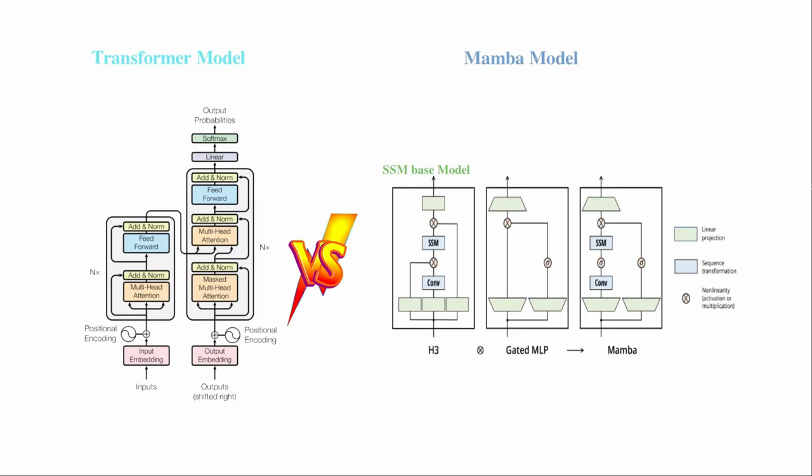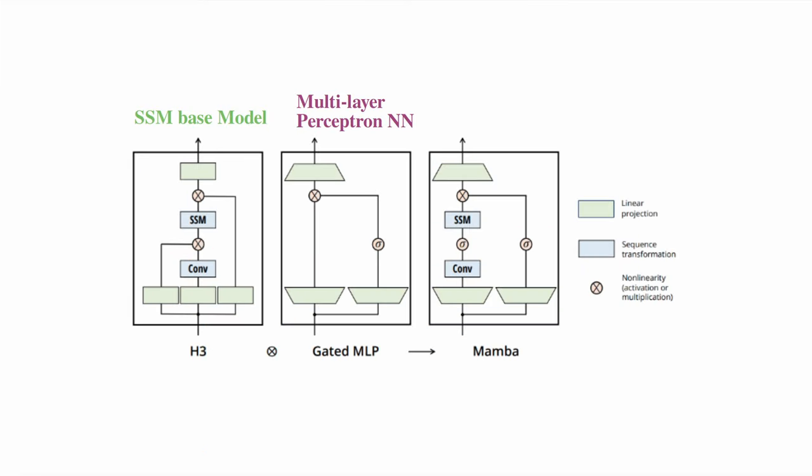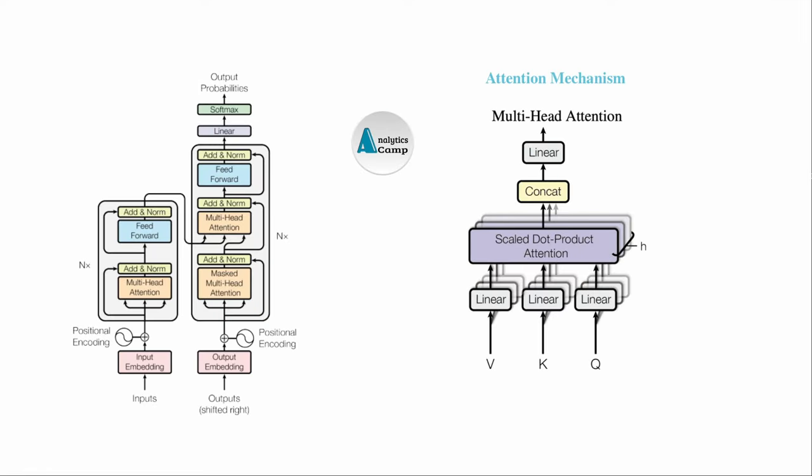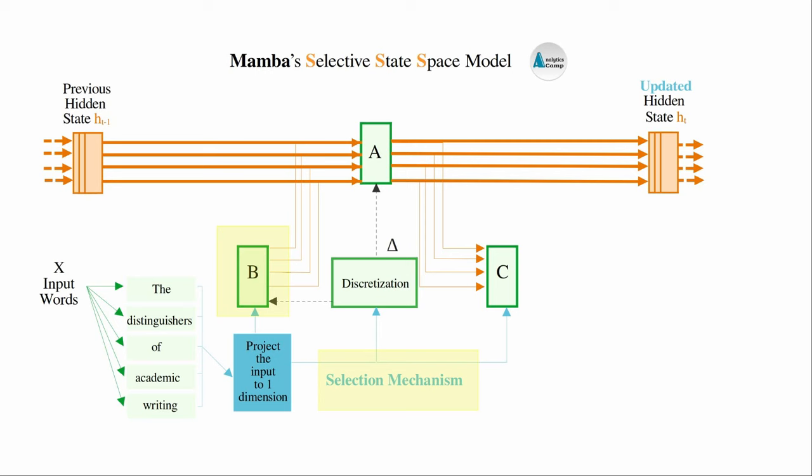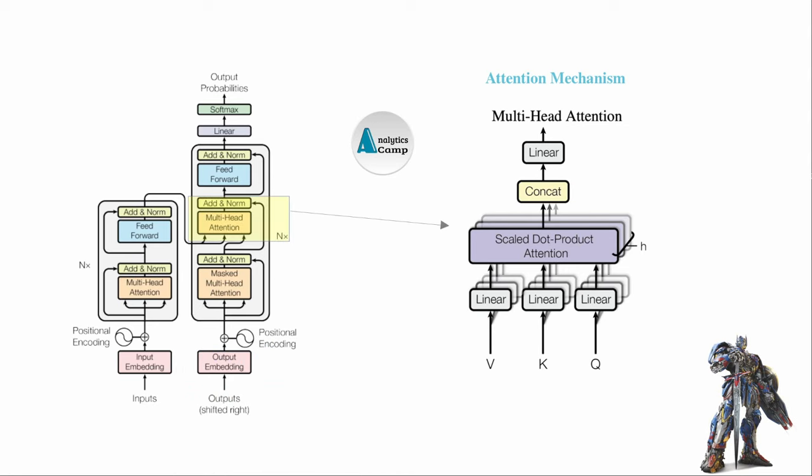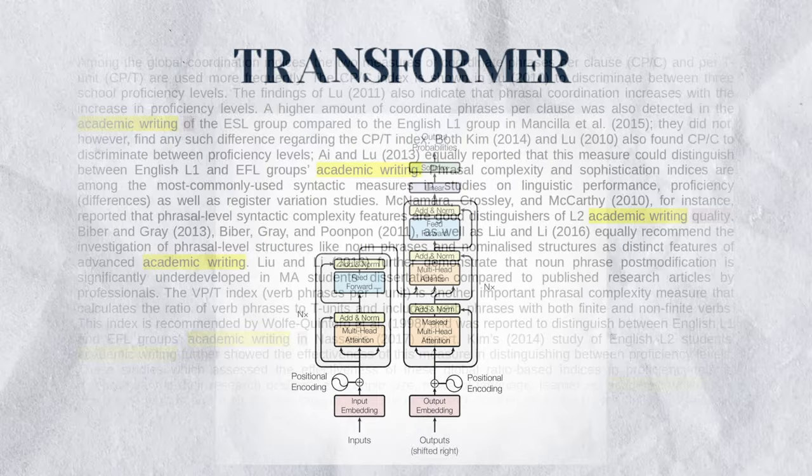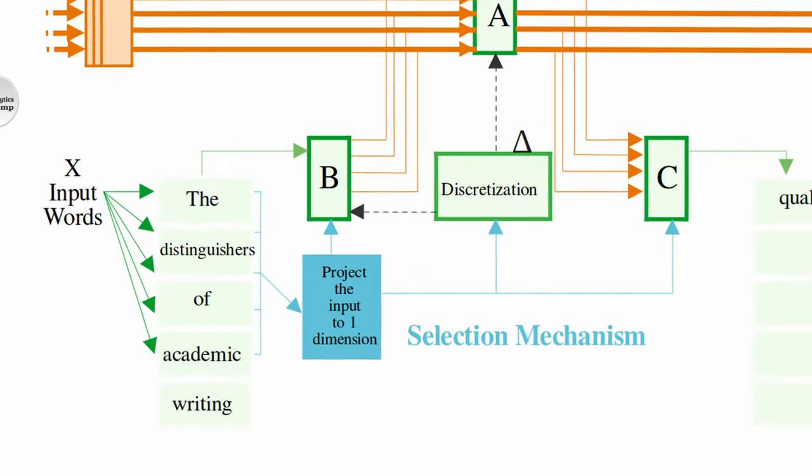Even though the two models use completely different architectures, the main differences between the transformer and Mamba language models lie in the differences between the attention mechanism in transformers and the selection mechanism in Mamba. Here's the cool part. Unlike transformers heavily reliant on the attention mechanism which takes all the context into account, Mamba doesn't look at all the data at once.